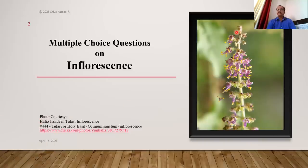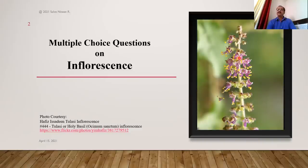This central axis or main axis of inflorescence is called the rachis or peduncle. Sometimes it is differentiated: the main axis can be distinguished into two parts. The lower part on which flowers are not directly produced is called the peduncle, and the upper part on which flowers are directly produced is called the rachis. The peduncle is the stock of inflorescence.